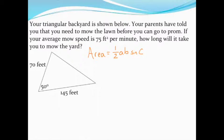In this example we want to figure out how much time it's going to take to mow this triangular backyard. What we know is that we mow at a rate of about 75 square feet per minute.